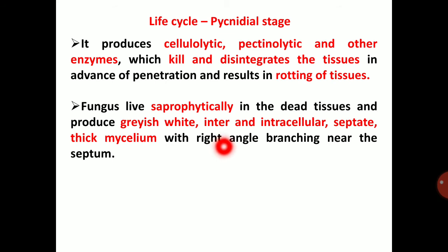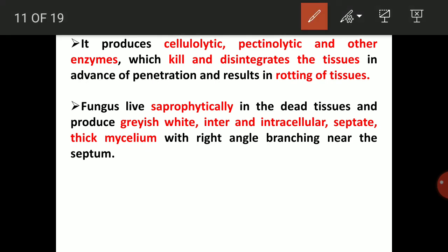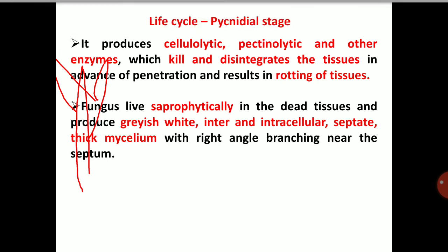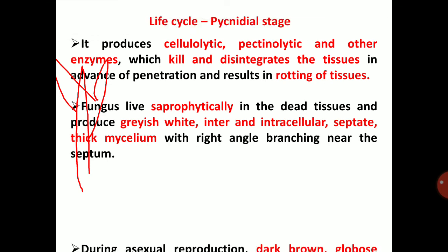Mycelium grows both inter- and intracellularly, meaning it grows both between and inside the cells. The mycelium is aseptate and thick, and produces right-angle branching near the septum. Right-angle branching means branching at approximately 90 degrees to the main branch.